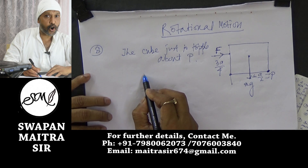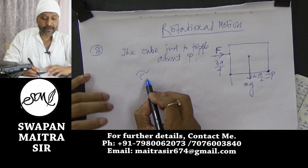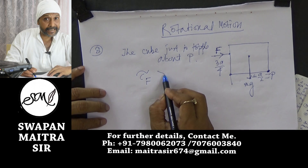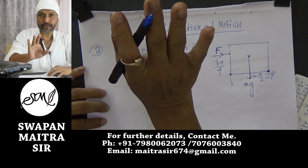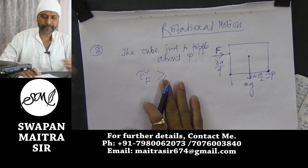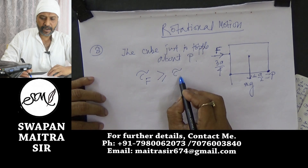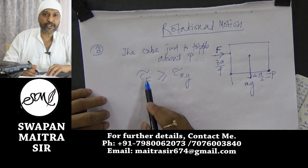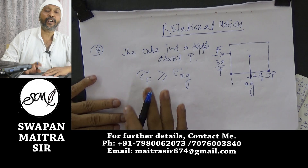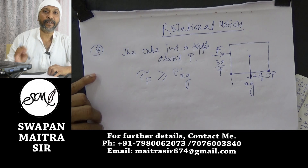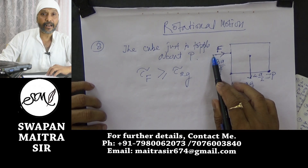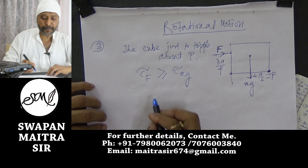For toppling, the torque applied by force F must be greater than or equal to the torque by Mg. When they are equal, the cube is just not toppling. Torque equals force into perpendicular distance.